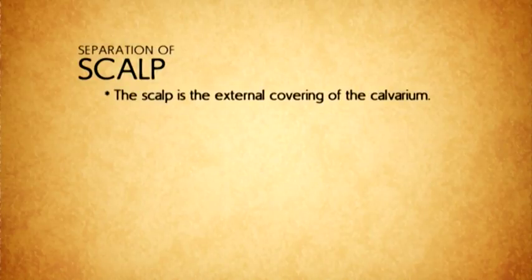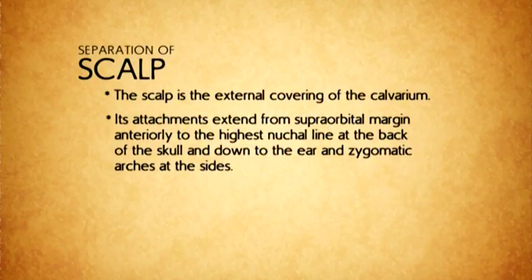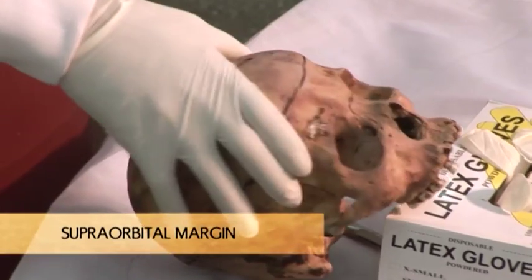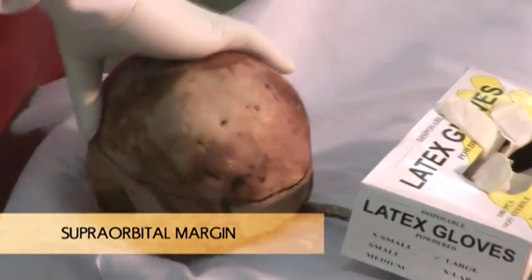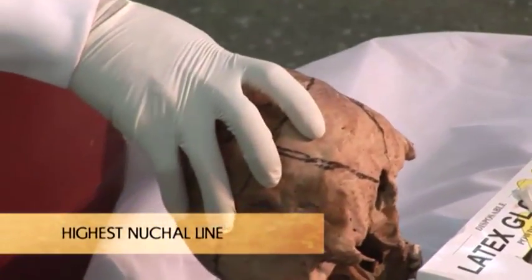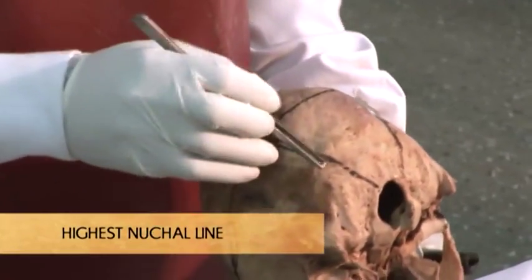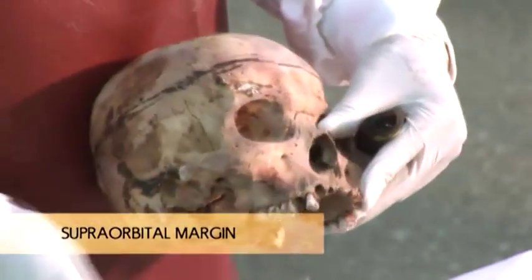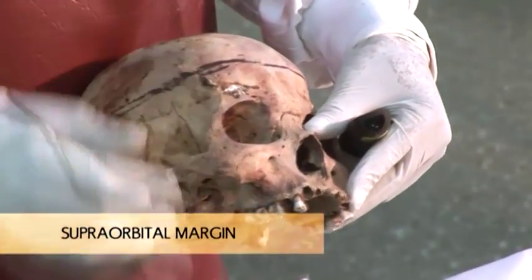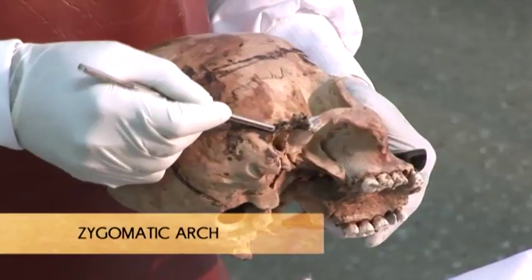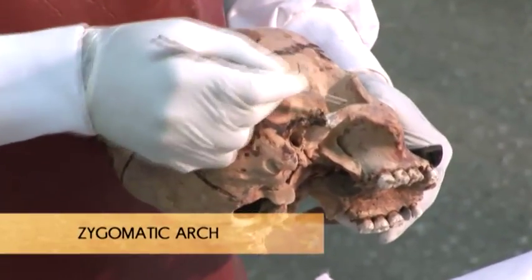The skull covers the cranium. Its attachment runs from the supraorbital margin to the highest nuchal line posteriorly. That is the highest nuchal line. Then it extends from the ear and then the zygomatic arch.